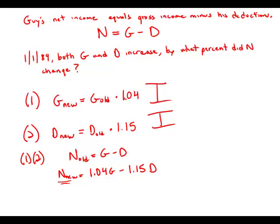Let's say that gross income is two hundred thousand dollars. Well, one percent of two hundred thousand dollars is two thousand dollars. Four percent would therefore be eight thousand dollars, so the new gross income would increase by eight thousand dollars.